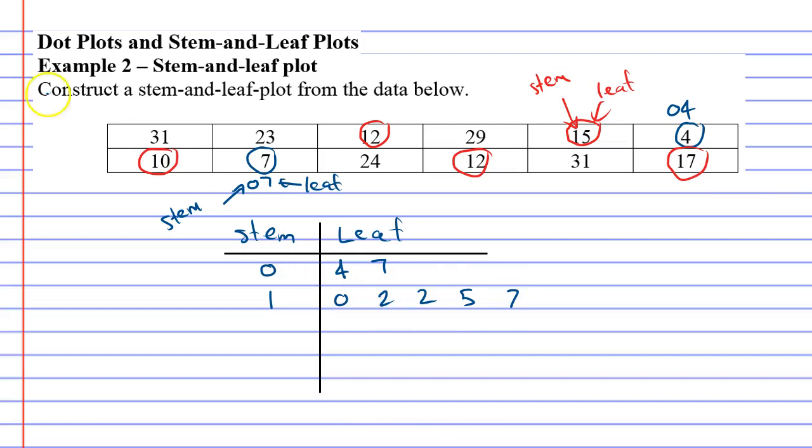Let's do the next one in green. We're going to look at ones in the twenties. There we go. I couldn't find my pen. 23, 24, 29. So our stem will be two and we've got 23, 24 and 29.